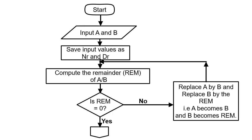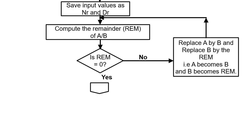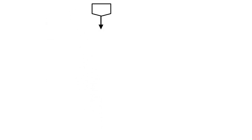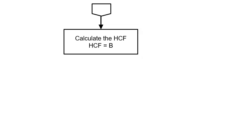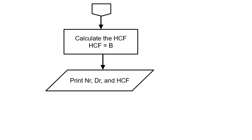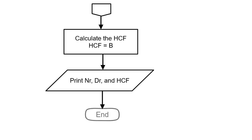When zero is your remainder, we use the off-page connector to connect to the next page. On the next page, the process is to calculate the HCF: HCF = b, which is the denominator. This is followed by an output — print nr, dr, and HCF, that is numerator, denominator, and HCF — and then we end the program.